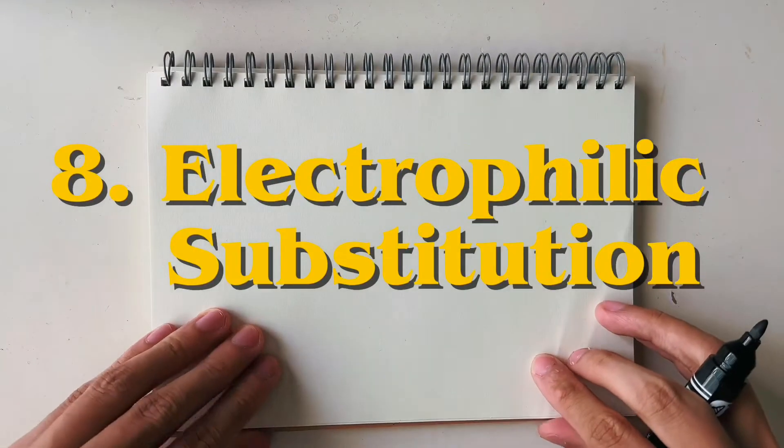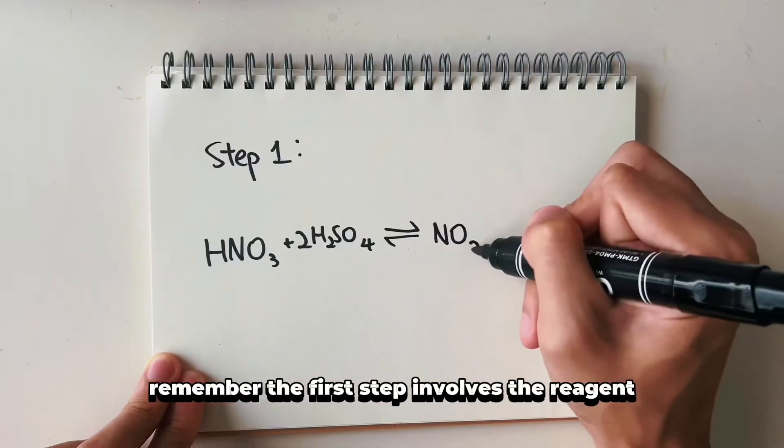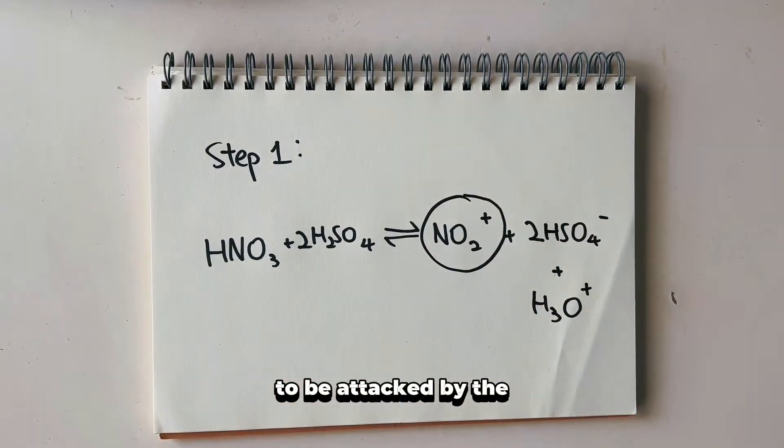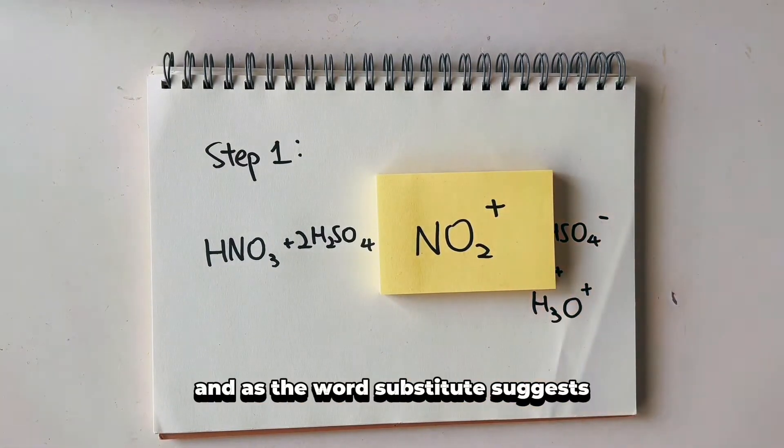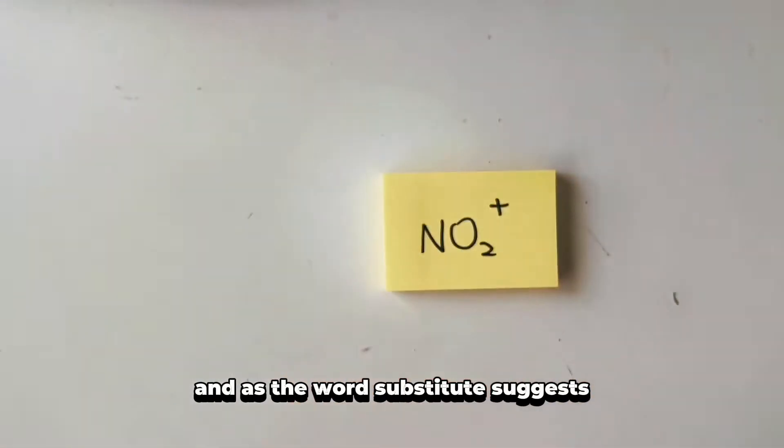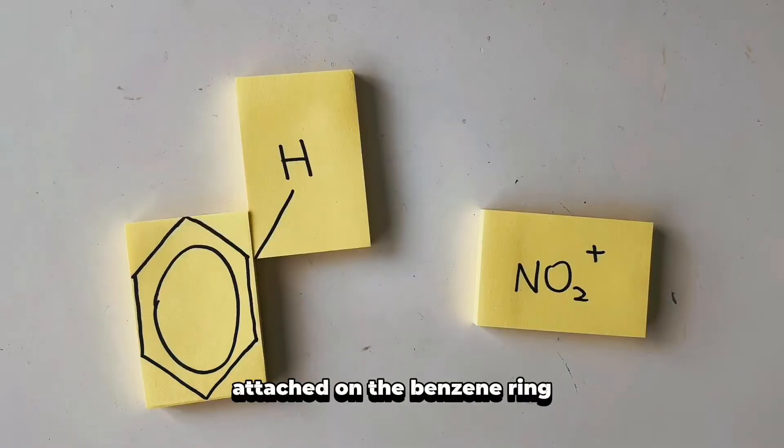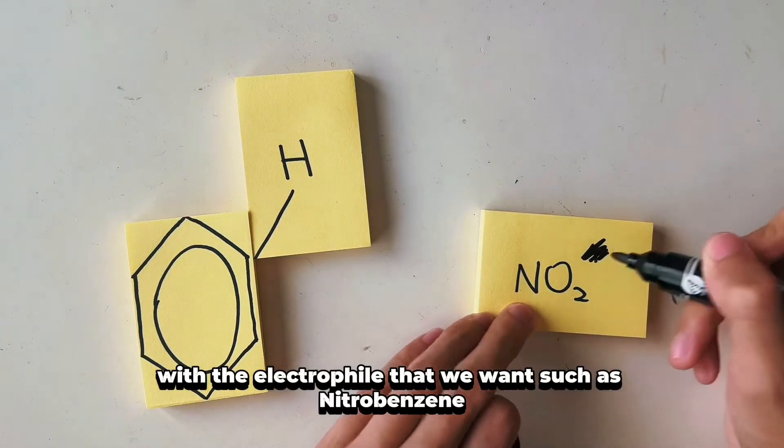For electrophilic substitution, remember the first step involves the reagent plus the catalyst to generate the electrophile to be attacked by the electron-rich benzene ring. As the word substitute suggests, it literally means substituting the invisible hydrogen attached on the benzene ring with the electrophile that we want, such as nitrobenzene, methylbenzene, and 2-bromomethylbenzene.